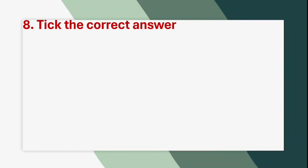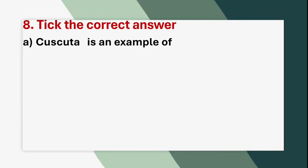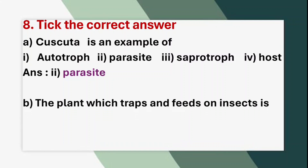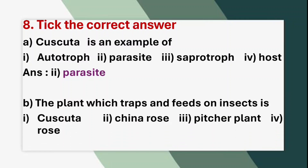Eighth question — Tick the correct answer. (A) Cuscuta is an example of: 1. Autotroph, 2. Parasite, 3. Saprotroph, 4. Host. The correct answer is option 2: Parasite. (B) The plant which traps and feeds on insects is: 1. Cuscuta, 2. China rose, 3. Pitcher plant, 4. Rose. Correct answer is option 3: Pitcher plant.